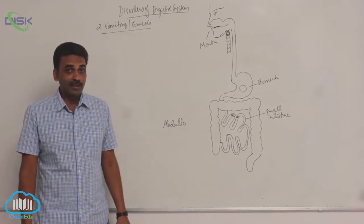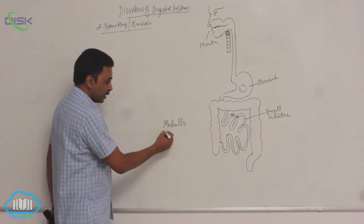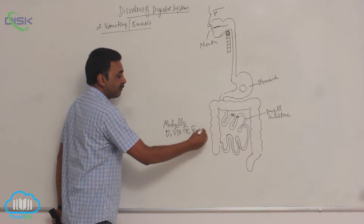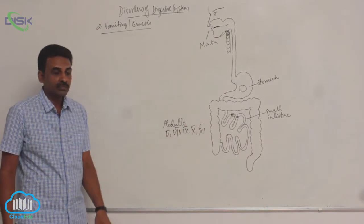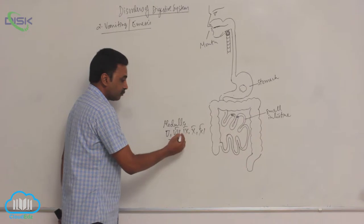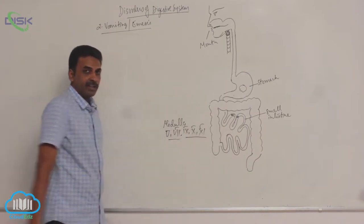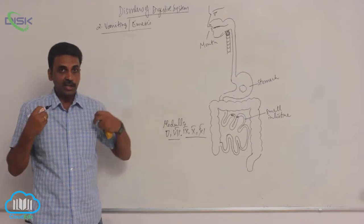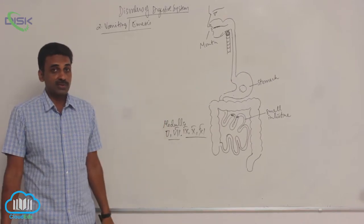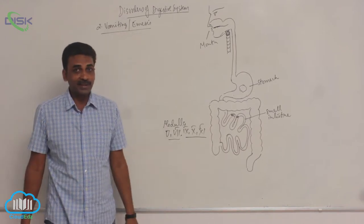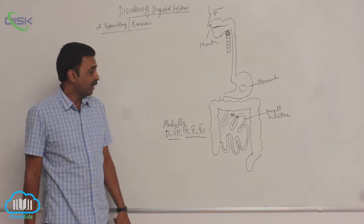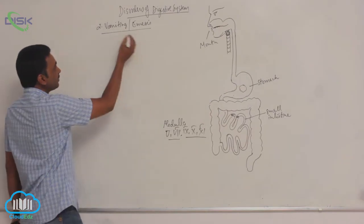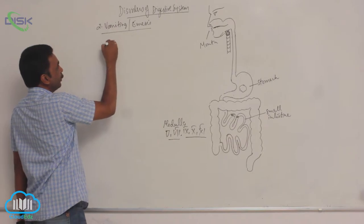From the vomiting center in the medulla oblongata, motor impulses are sent out through cranial nerves 5, 7, 9, 10, and 11. These cranial nerves carry the motor impulses so that the act of vomiting is completed. At the time of vomiting, nausea is also observed.